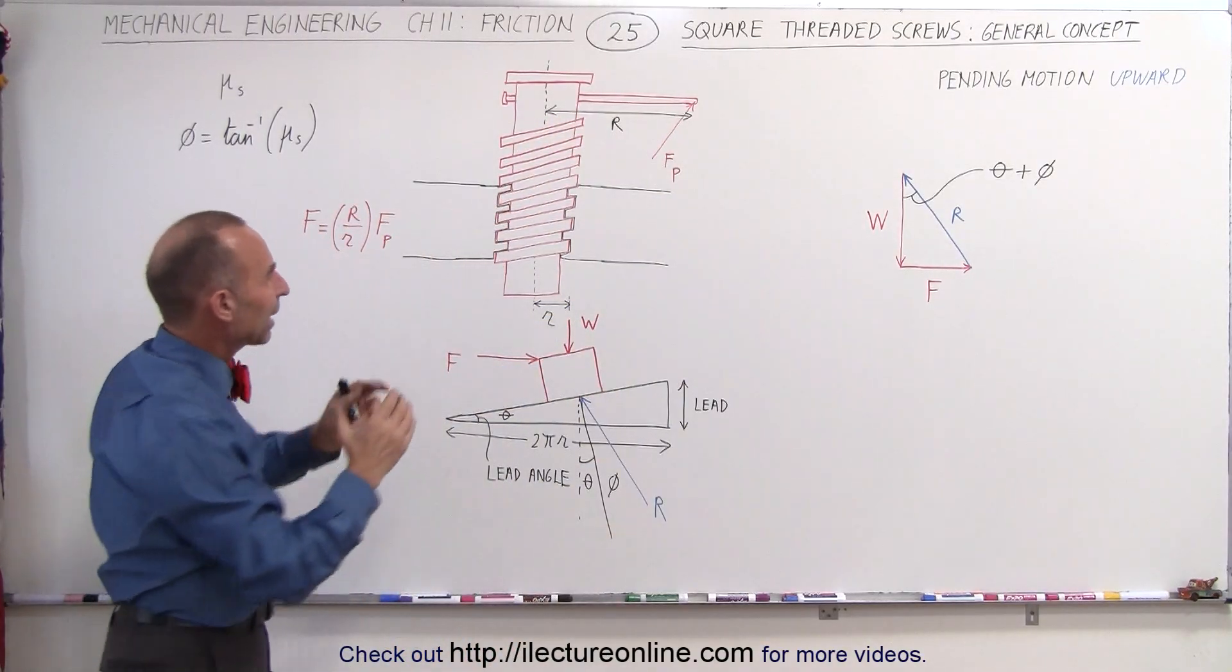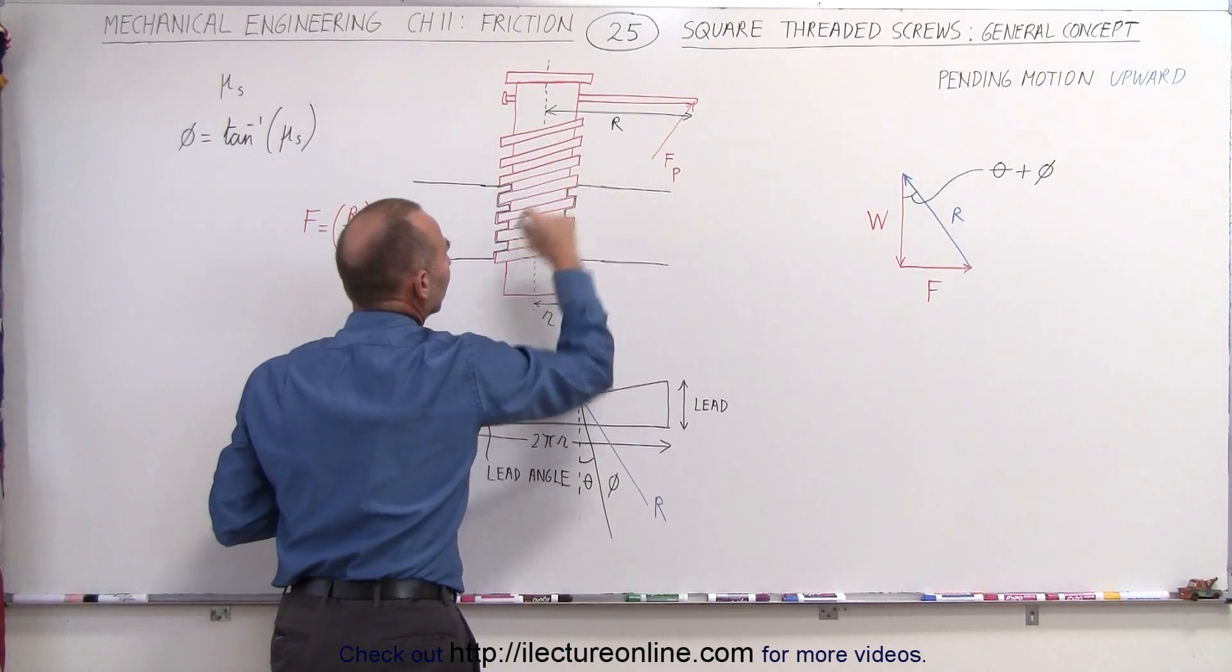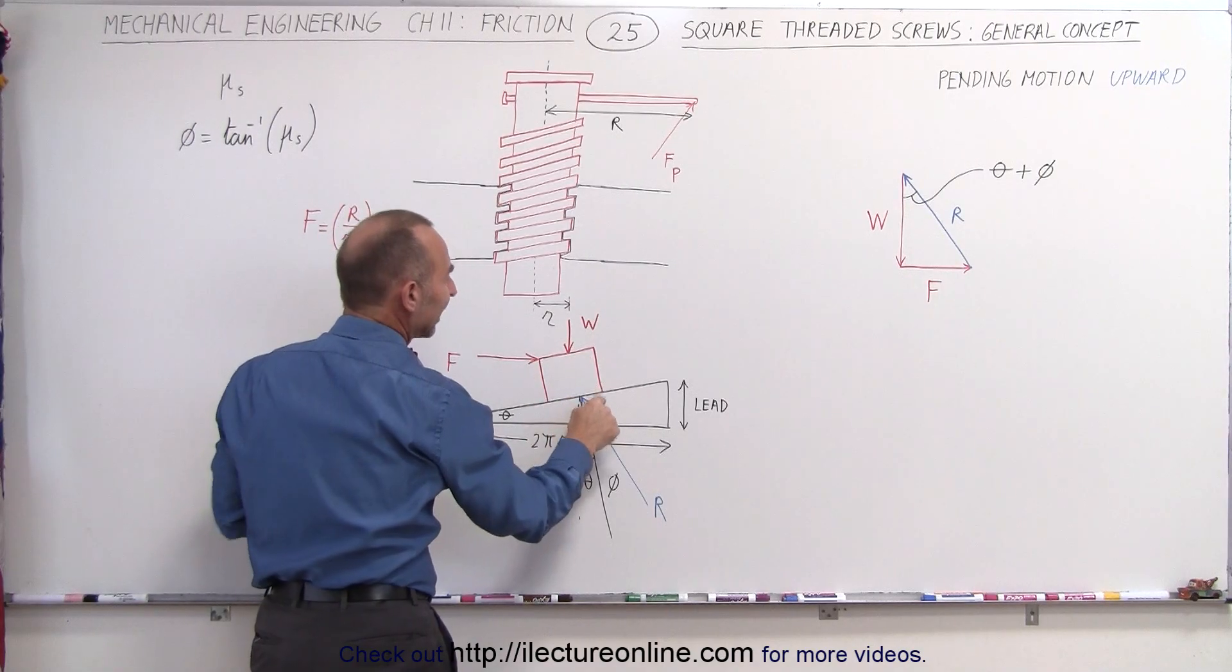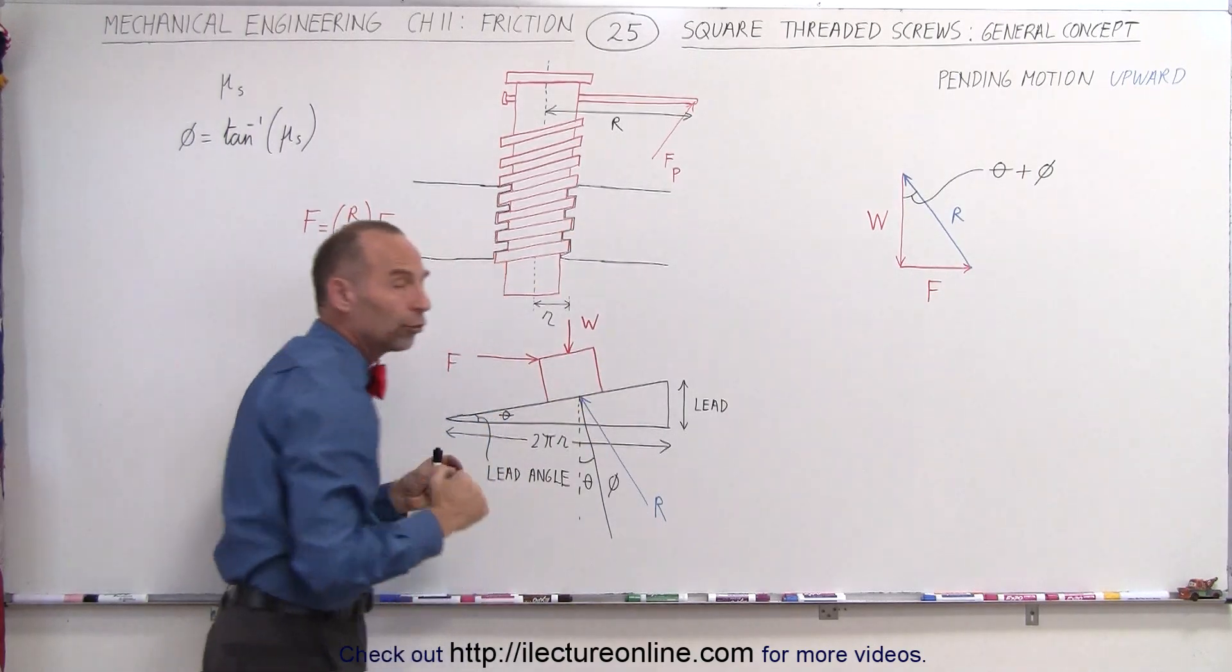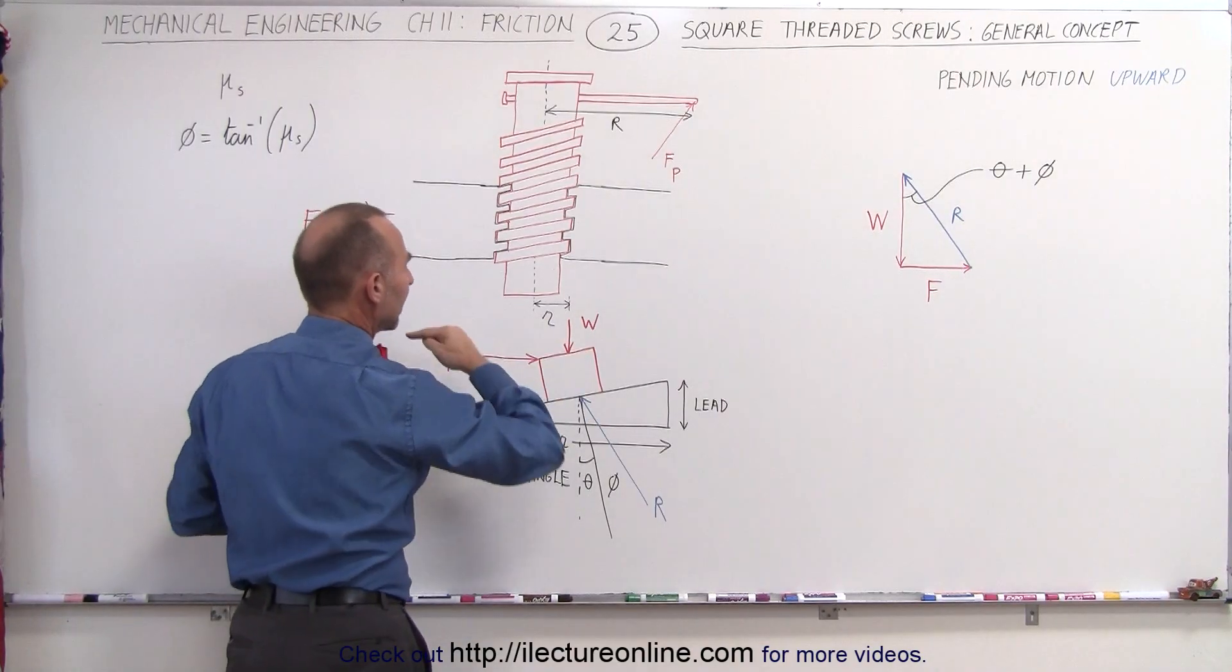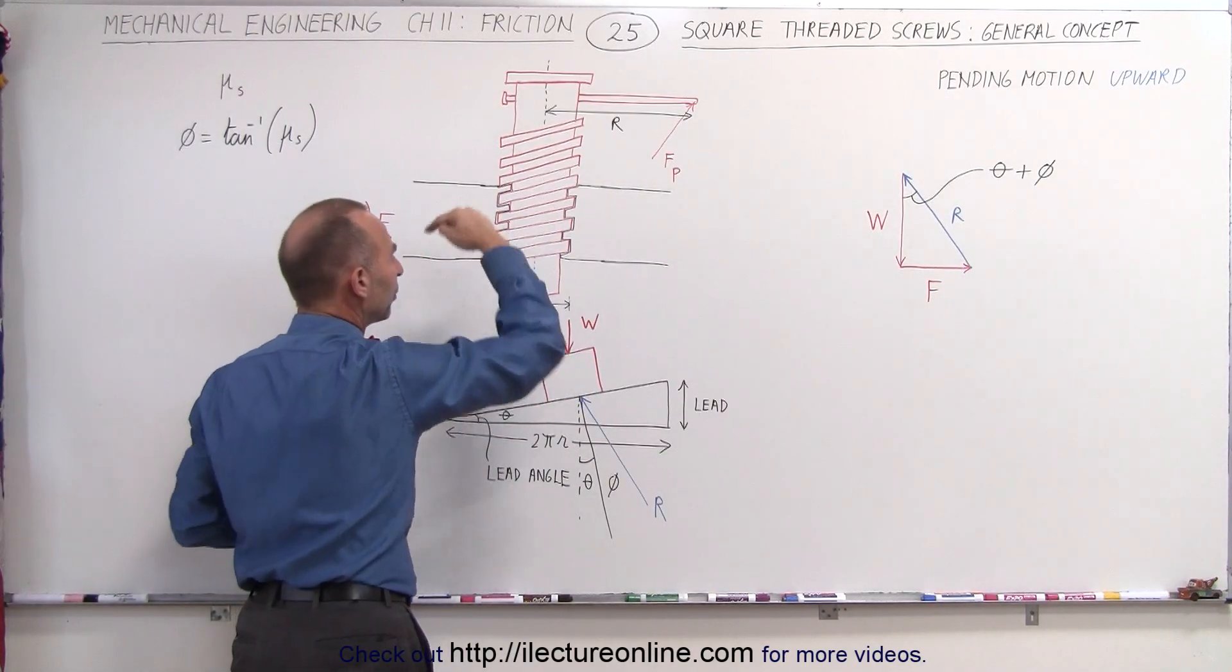So when we take a look at what happens at the thread itself, we can imagine this being the thread of the screw pushing against the object, which of course also is threaded. And so if we're pushing against the screw so that the screw will wind itself upward,